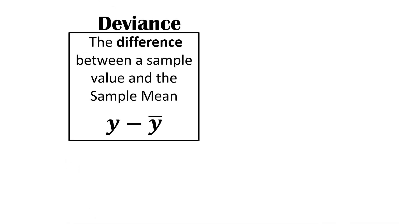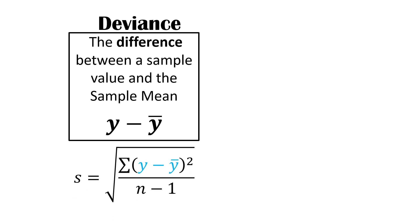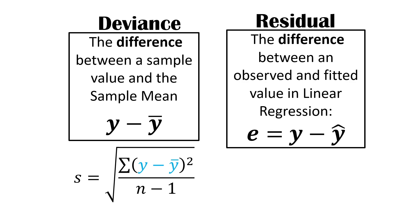A deviance is the difference between a sample value and the sample mean (y minus ȳ), used to measure spread or variation, appearing in the sample standard deviation formula. A residual looks very similar — the only difference is the context. The difference between an observed and a fitted value in linear regression is your residual error, and it's the same kind of idea.